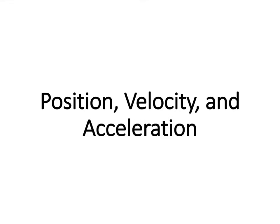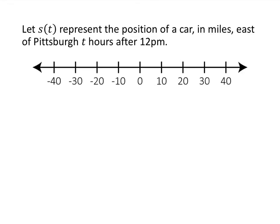In this video I'll talk about an application of the first and second derivatives to motion — specifically position, velocity, and acceleration. Very often we'll have a function, which we typically call s, that represents the position of an object. In this case we're talking about a car; the units are miles, and we're talking about the distance that is east of Pittsburgh t hours after 12 p.m.